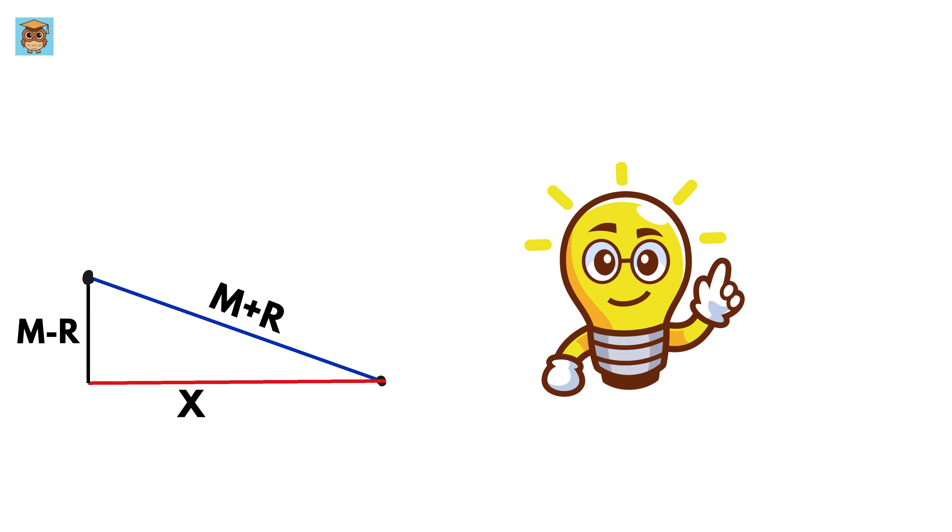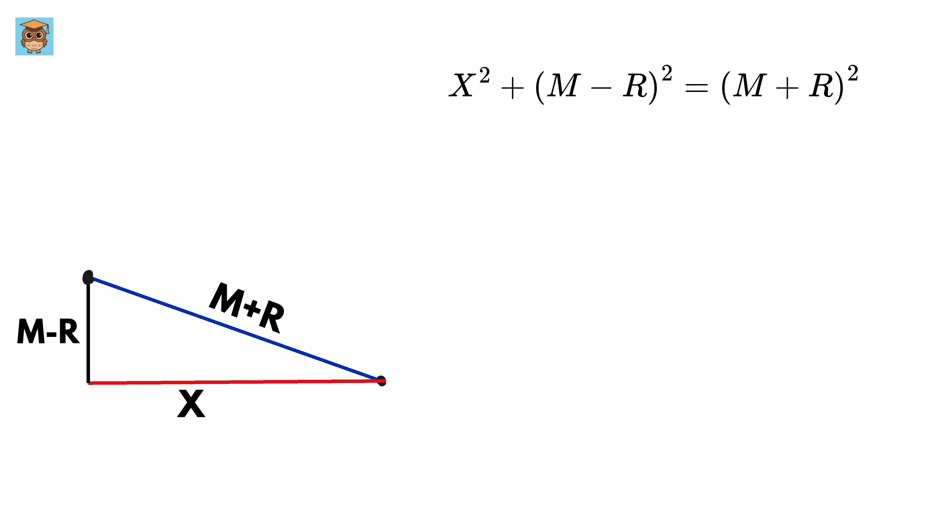So what will be our next step? Yes, you are right, we will use Pythagoras theorem to get x² + (m - r)² = (m + r)². This gives us x² equals this minus this, which is of the form a² - b².